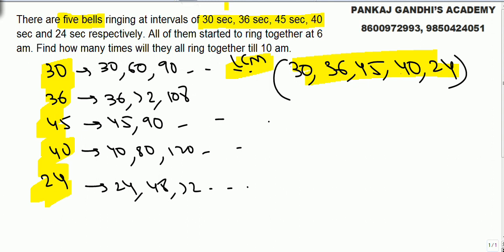Now I always prefer to take LCM like this: I take the largest number, 45 is 3 into 3 into 5. Check each value: 30 is 2 into 3 into 5, I need to take 2.